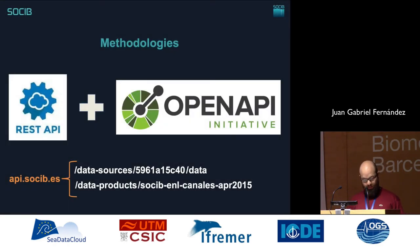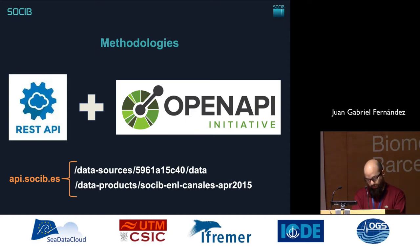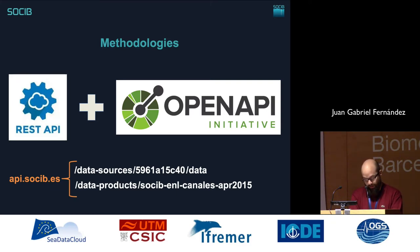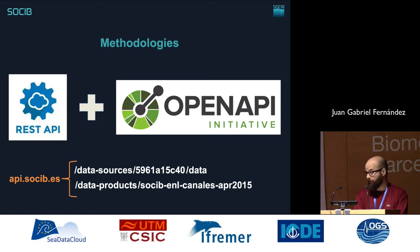I'd like to briefly describe the methodologies we used to develop this API. Firstly, this is a REST API, which means the endpoints used to access the SOCIP resources have been designed in a hierarchical way. We have also planned to use Hypermedia as the Engine of Application State more extensively. Lastly, I'd like to emphasize that this API has been developed following the OpenAPI specification, making the API itself interoperable. Basically, the API is described through a JSON document following this specification, and the interactive documentation has been almost automatically generated thanks to this approach.